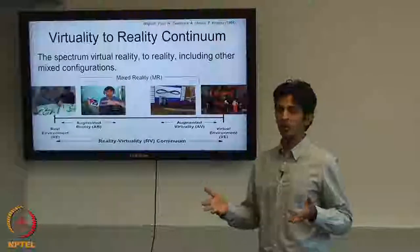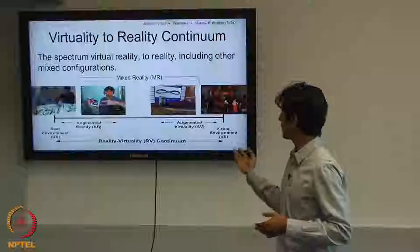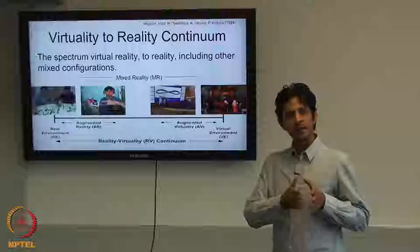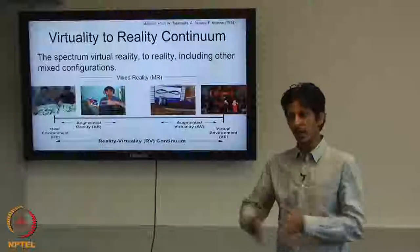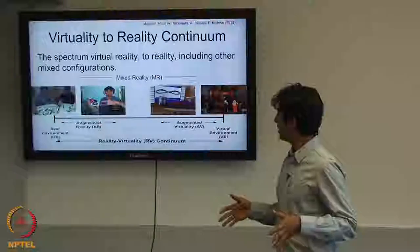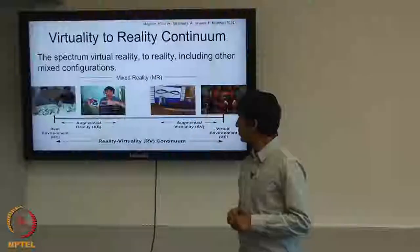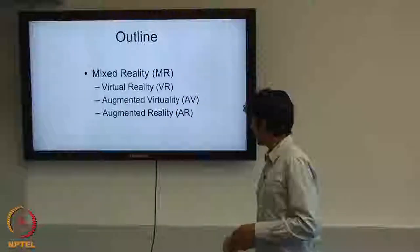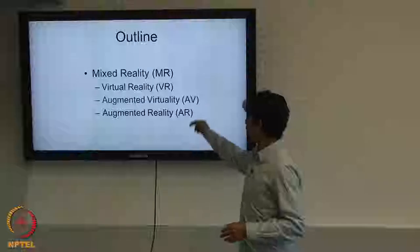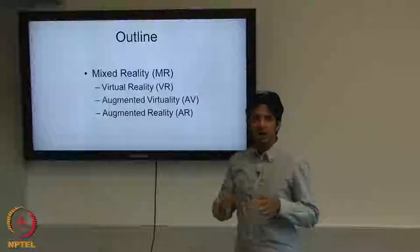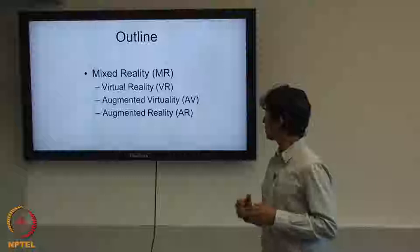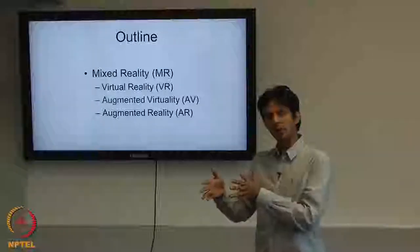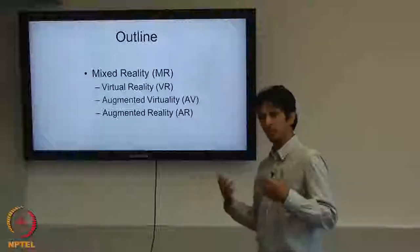Everything in between is termed mixed reality. This was first proposed by Paul Milgram back in 1994, who defined this continuum between virtuality and reality. Everything in between is mixed reality, and augmented reality, virtual reality, as well as augmented virtuality are different steps within this continuum. We'll start from the very extreme — virtual reality — and move slowly towards augmented reality, which is one step away from reality.